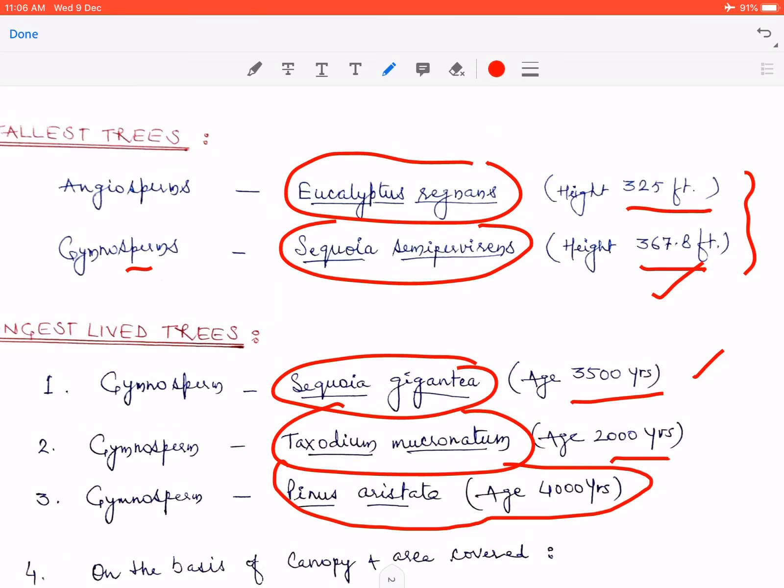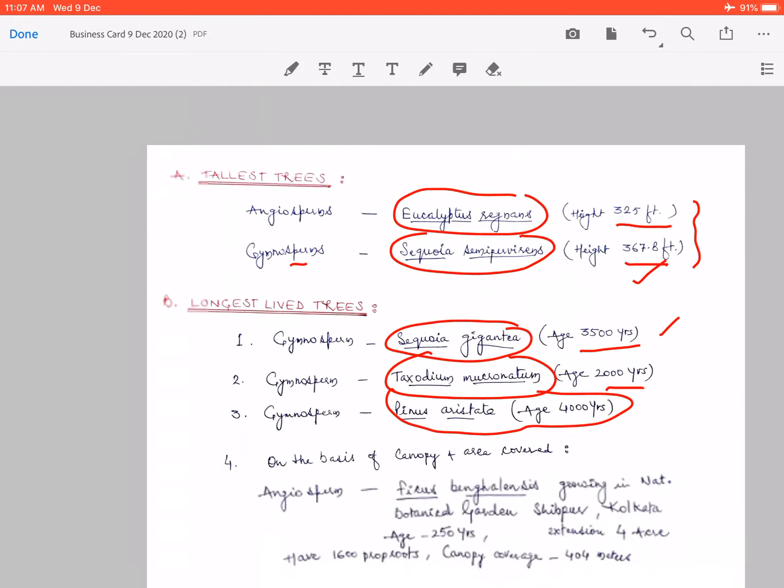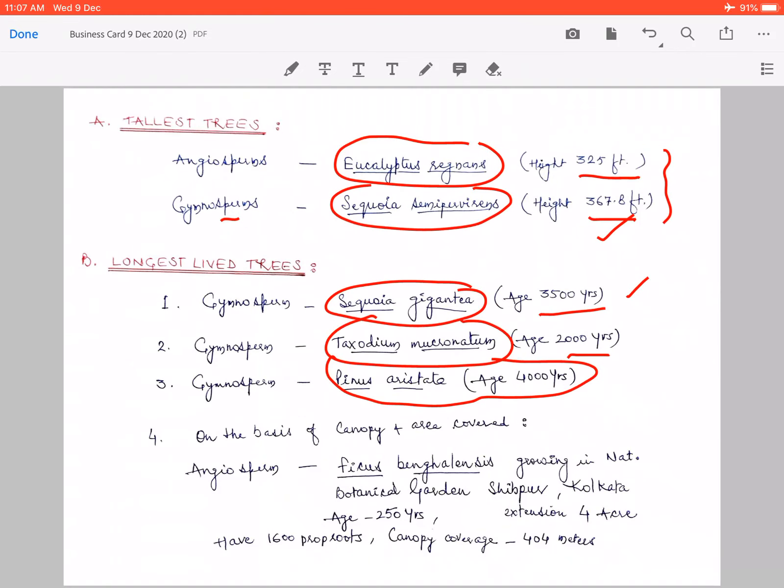Iske baad hum baat karte hain on the basis of area and canopy coverage. Aur isme jo naam sabse pehle aata hai woh us vriksh ka aata hai jo ki National Botanical Garden Shibpur, Kolkata ke andar ugha hua hai. Aur woh naam hai ek bargad ke ped ka jise Ficus benghalensis kaha jata hai.